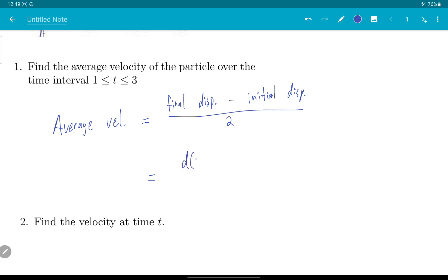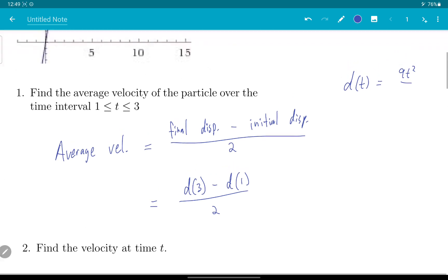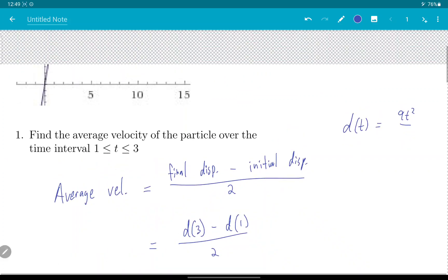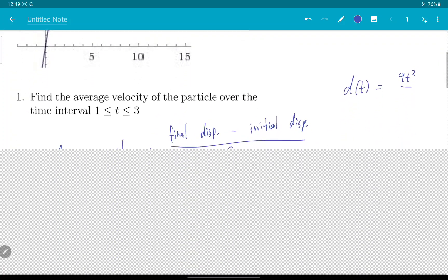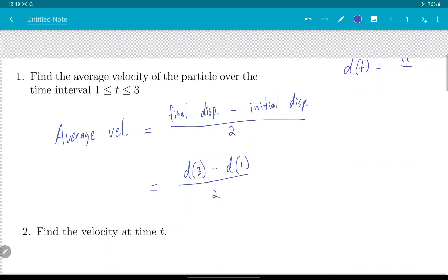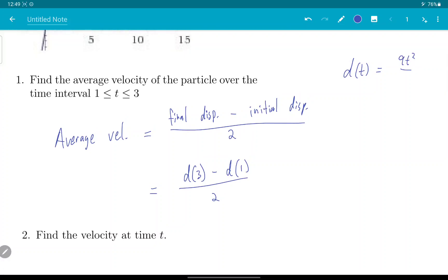What's that? That's D evaluated at 3, minus D evaluated at 1, divided by 2. And what is D? D of T is 9T over T squared plus 9.